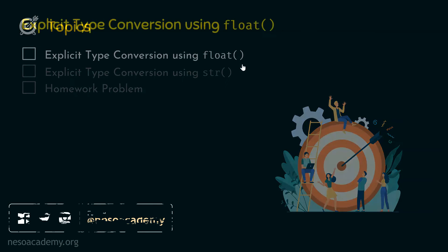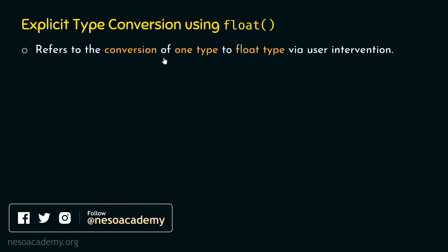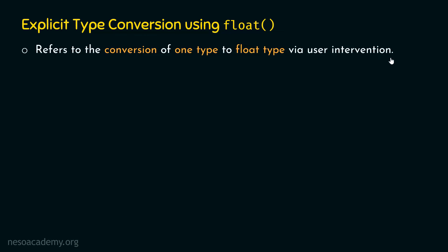Explicit Type Conversion using float refers to the conversion of one type to float type via user intervention. We already know that Explicit Type Conversion refers to conversion of one type to another type via user intervention, which is opposite to Implicit Type Conversion where Python handles the conversion. The float method converts one type of object to a float type object.